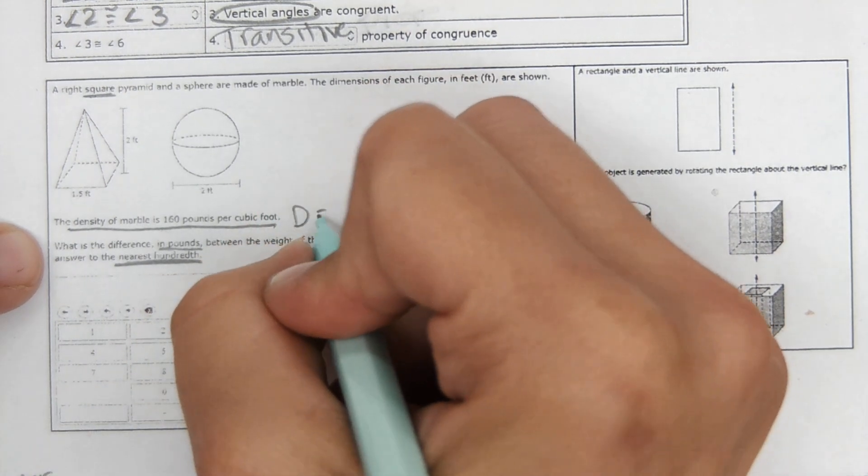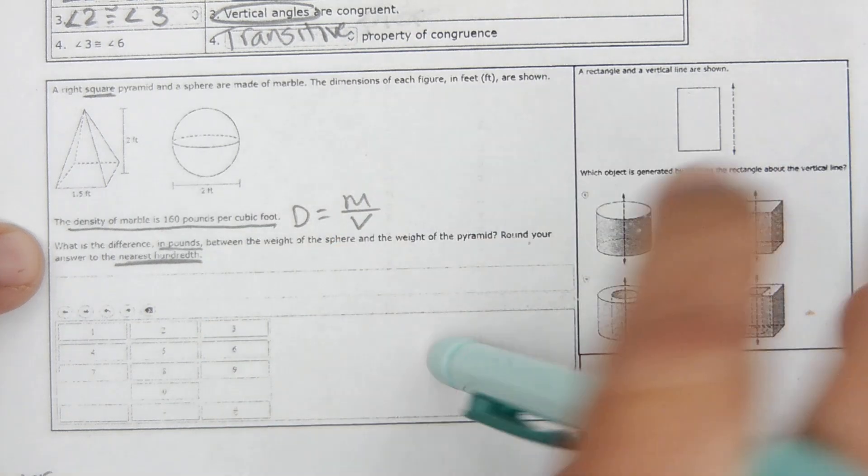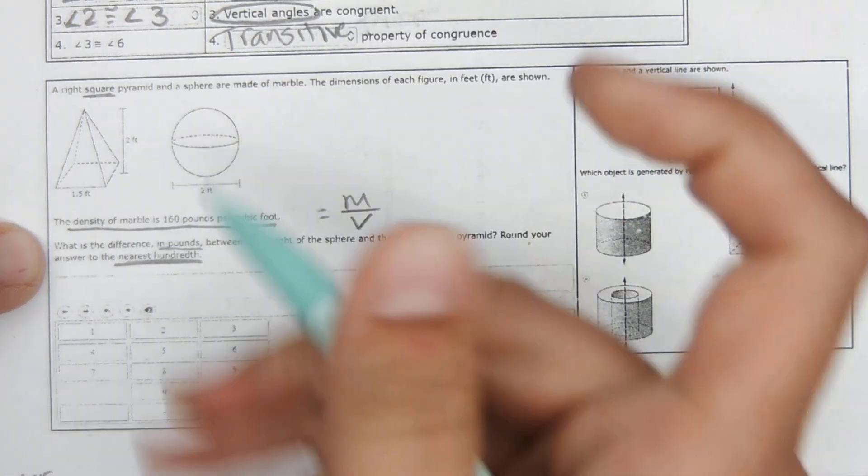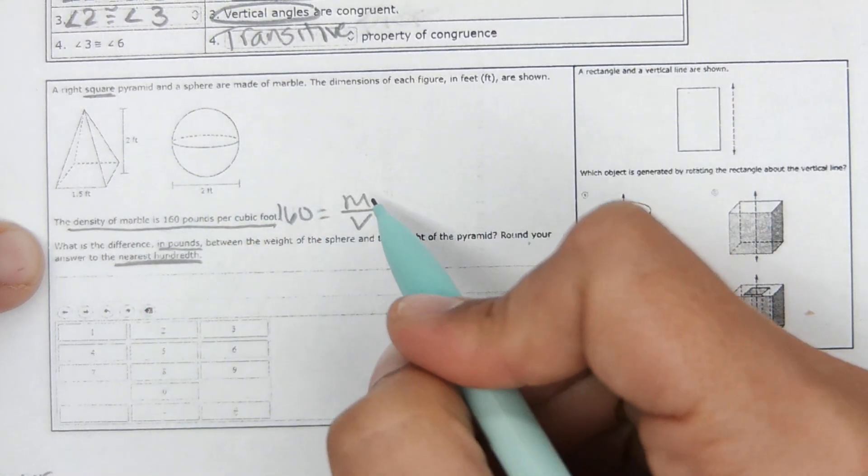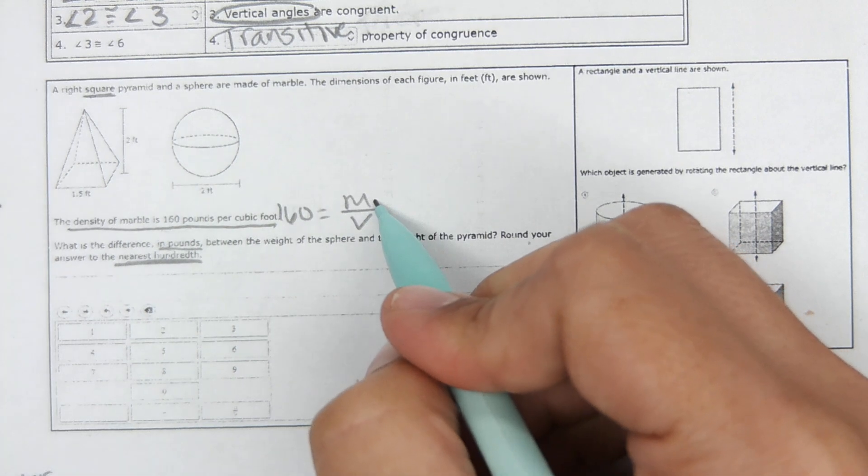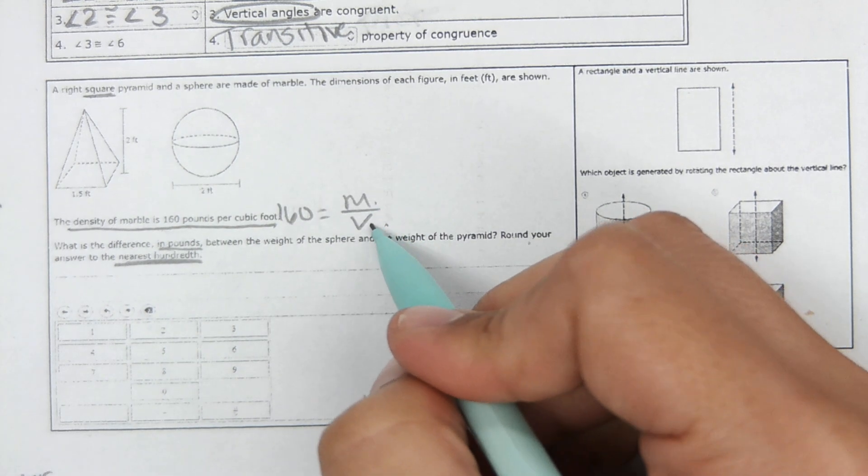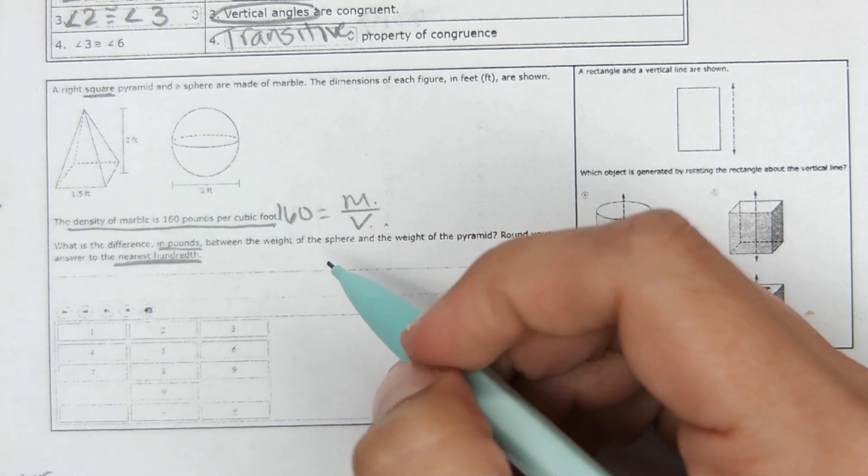Okay. Well, density equals mass over volume. They gave us the density is 160. We need to figure out the mass. So we need to actually calculate the volume of each of these to find the mass of each of them.